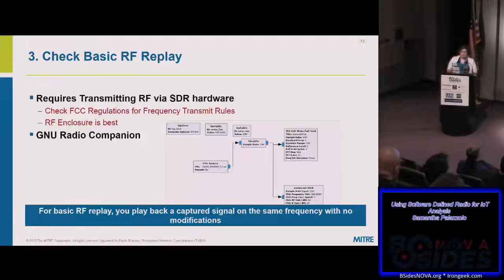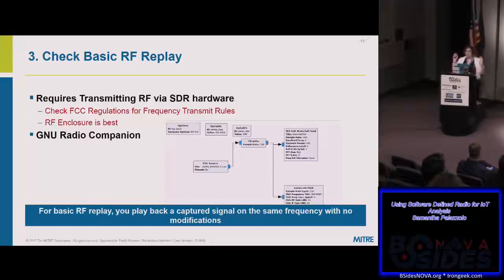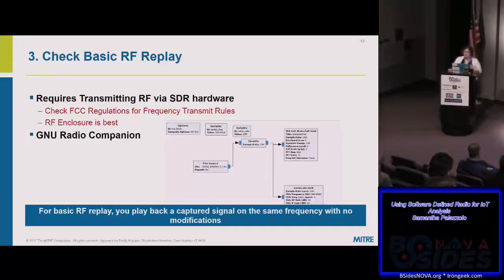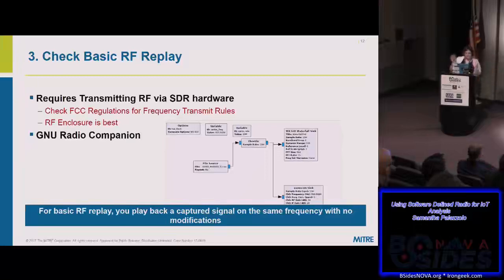The next step is checking for basic RF replay. An RF replay means you've captured the signal and you're just going to replay it on the same frequency with a transmitting SDR, and you'll get the same command executed by the device. This generally shouldn't happen — we know about rolling codes and other things that prevent basic replay. But with IoT devices, you can't assume they've followed best practices. Before you transmit, you really want to make sure you're following FCC rules, and if you're not sure, RF enclosures are your best bet.